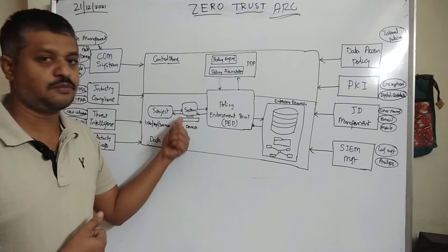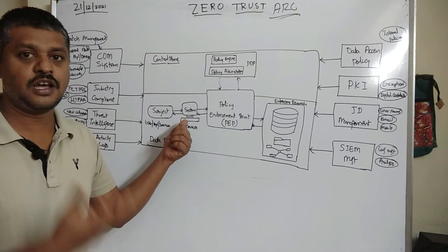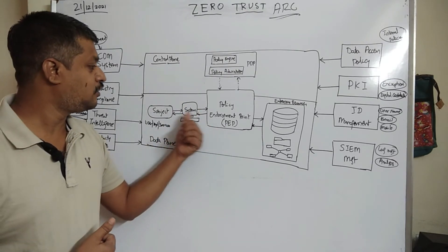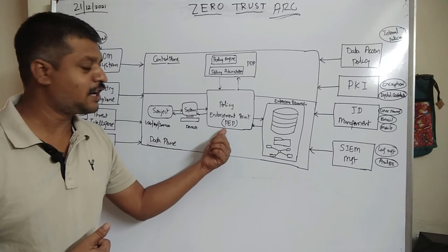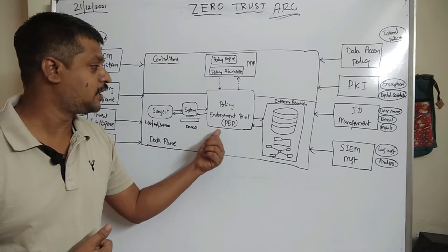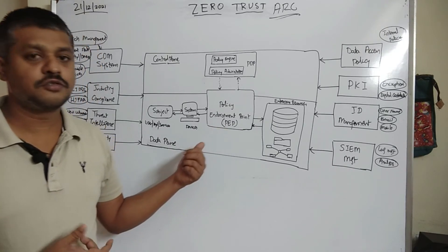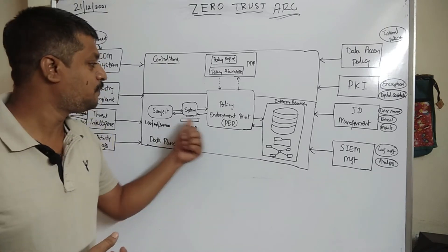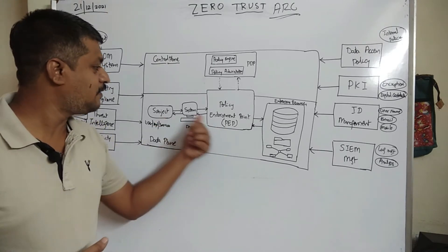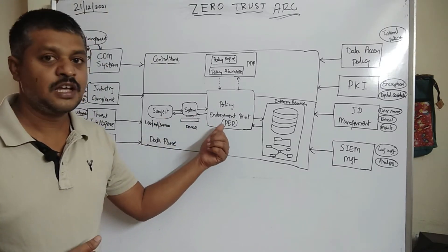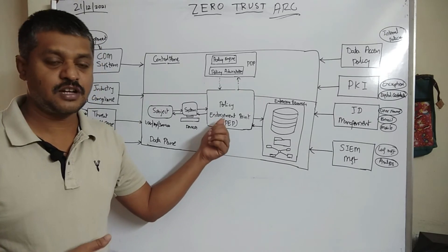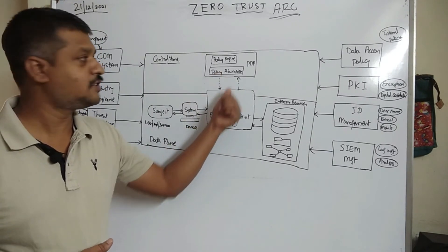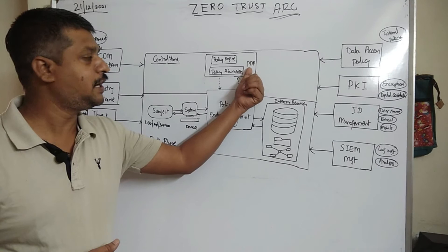The subject will use some system — maybe some kind of device. Through the device, the connection will come to the policy enforcement point. The policy enforcement point is nothing but a security guard.